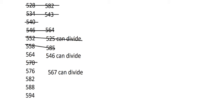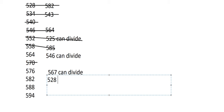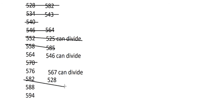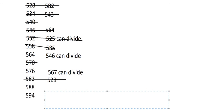582 swapped gives 528 — this cannot divide by 7. 588 — checking this number, it can divide. The last one is 594, swapped gives 547 — this cannot divide by 7.